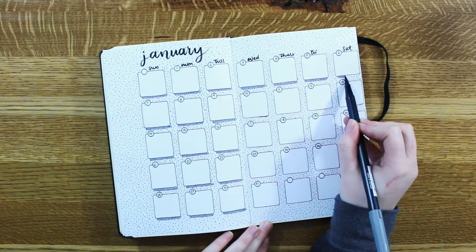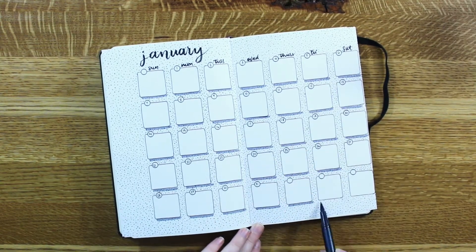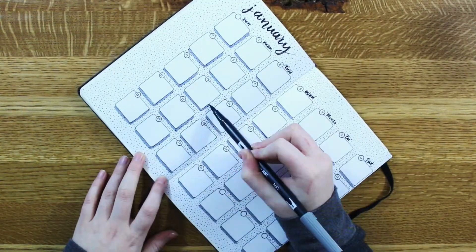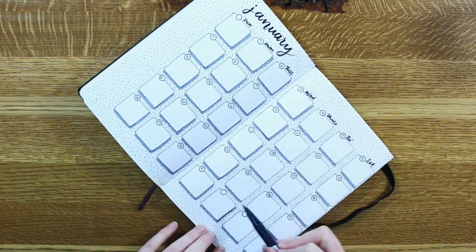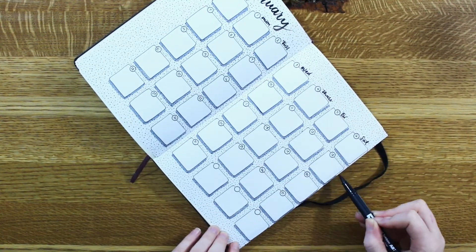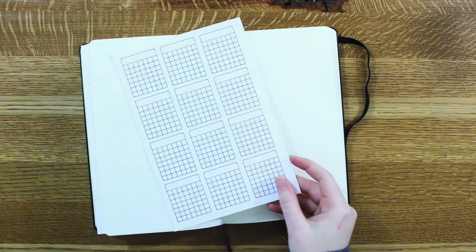Then I took a gray Tombow brush pen and put a drop shadow in, and I think it honestly made it pop! You can do this if you want, but you have the option of not having that on there if you don't want to, or using any color.